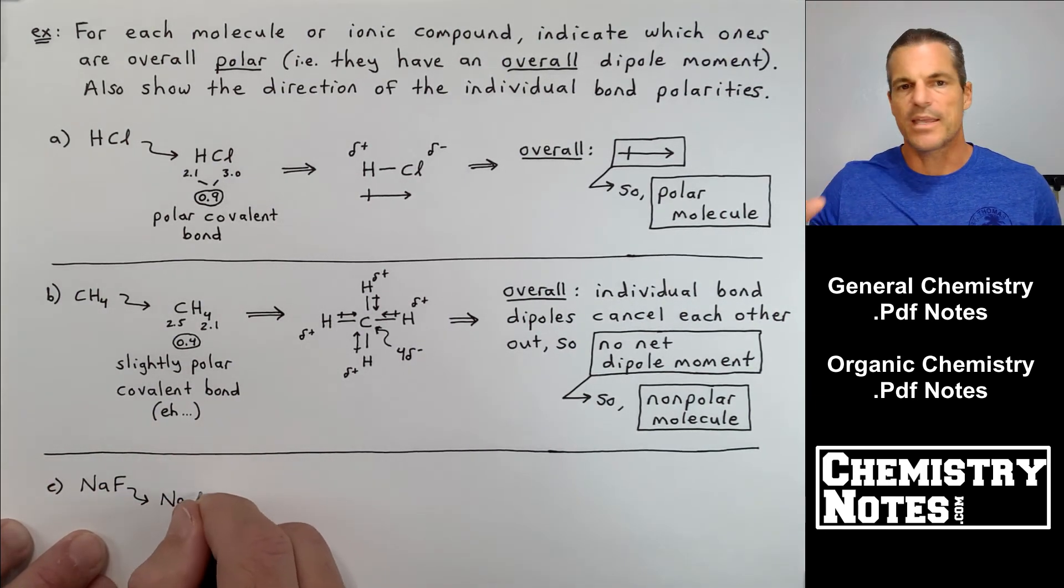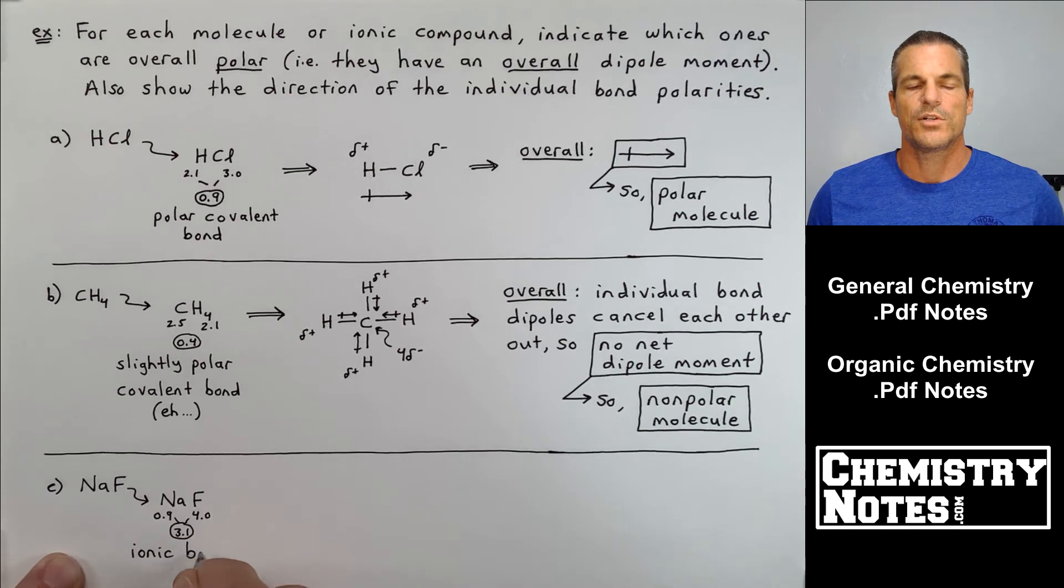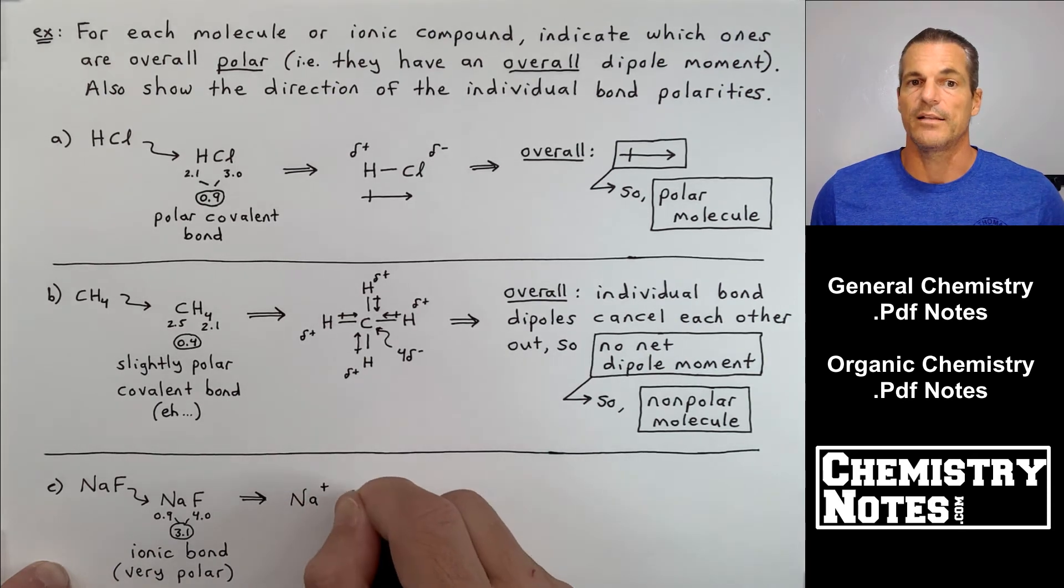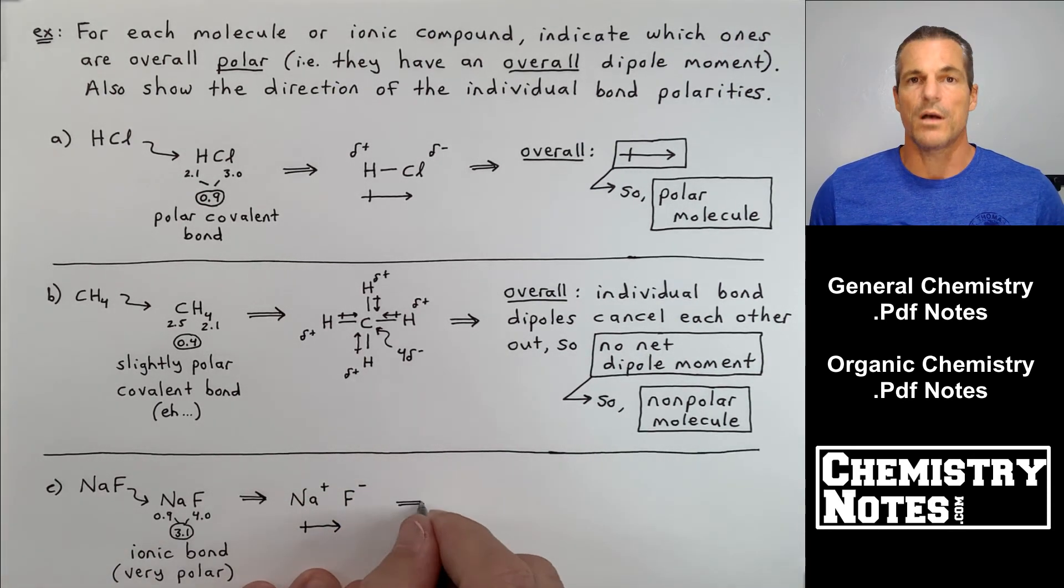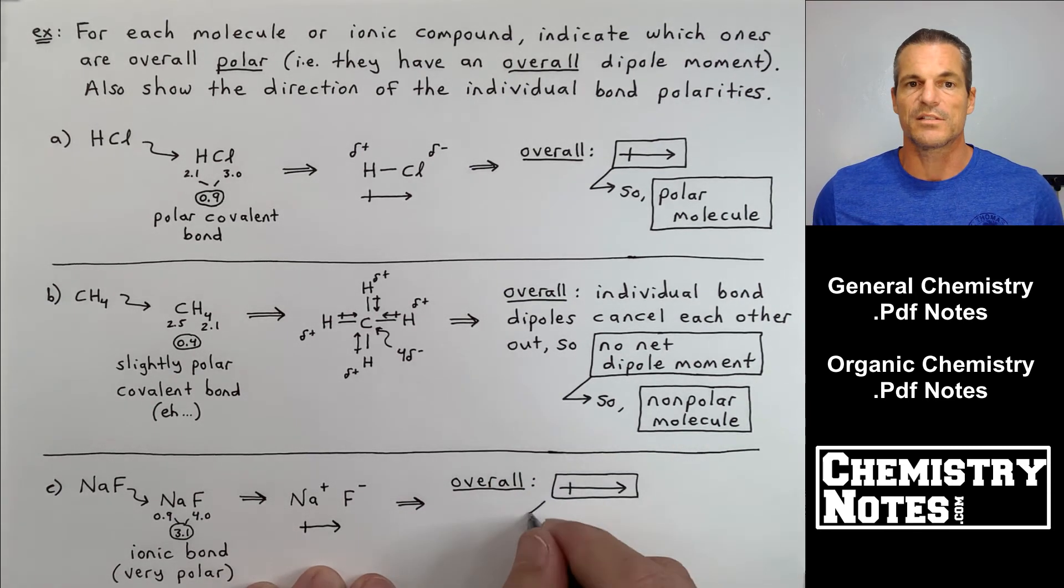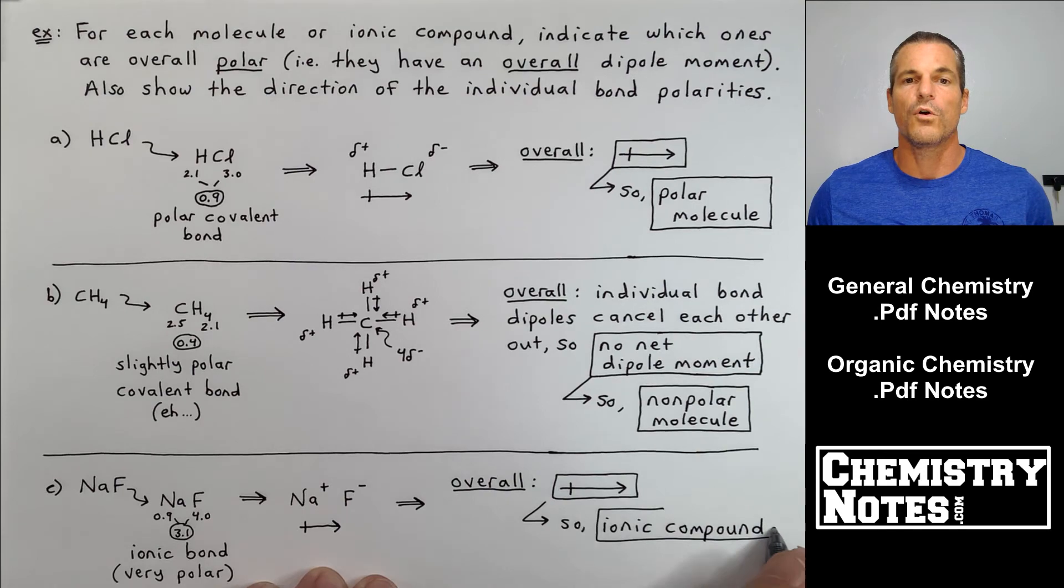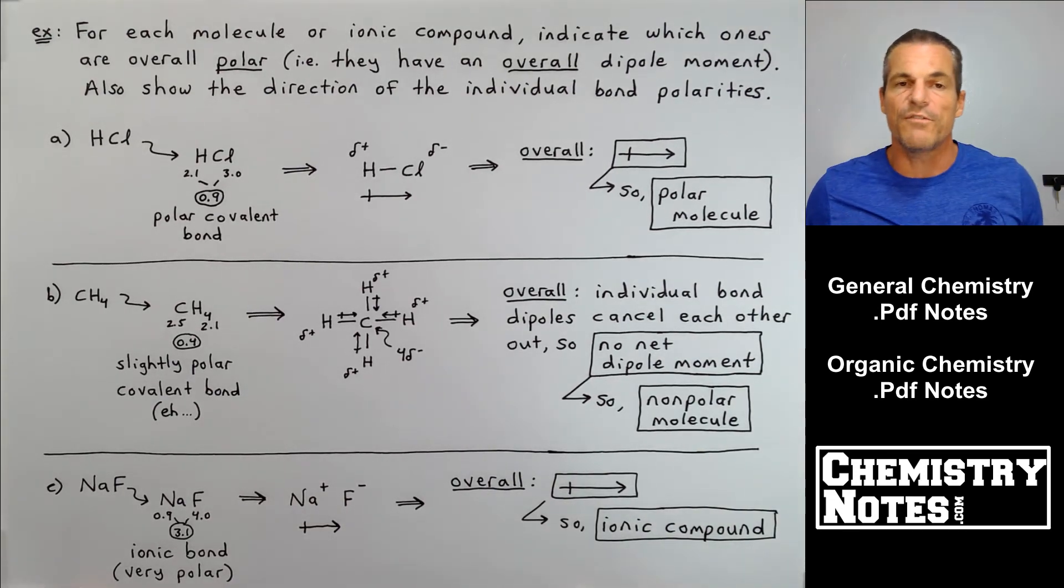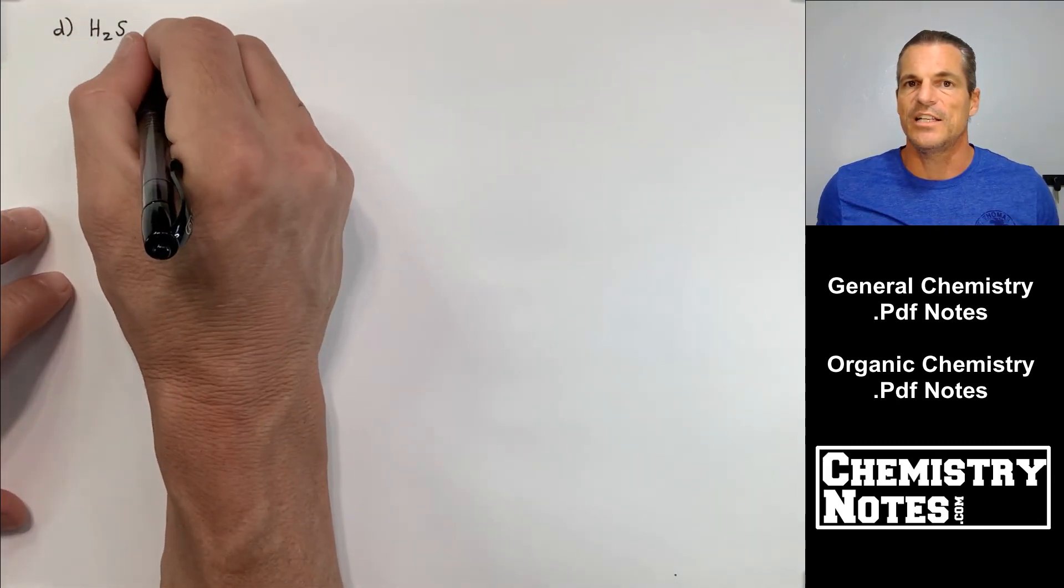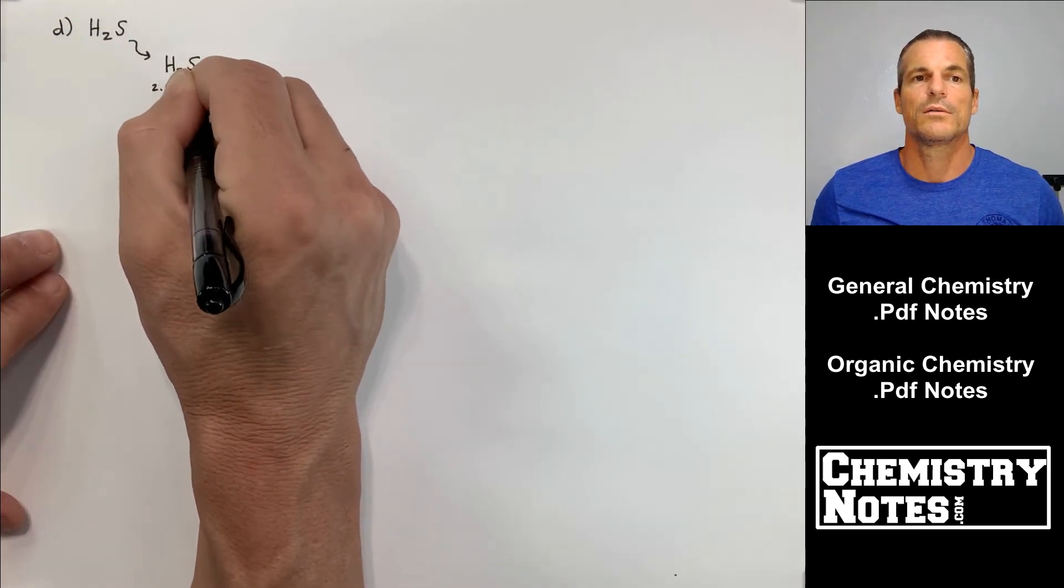NaF, sodium fluoride. Na, 0.9, fairly low. Fluorine, 4.0, fairly high electronegativity value. 3.1 is way beyond 1.7. This is certainly an ionic bond. Ionic bonds, we'll learn a little bit more about this later on. We can't draw a dashed line. A dashed line means shared electron pair. Here, fluorine fully rips the electron away from sodium, leaving sodium with a plus one charge, and then fluorine gets a full minus charge. Certainly, that's polar. Ionic compounds are polar.